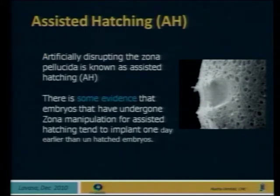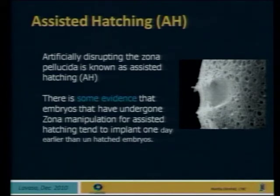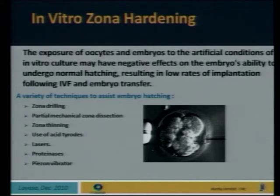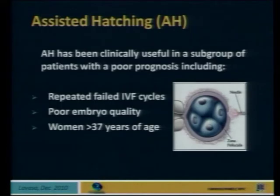What about assisted hatching? Artificially disrupting the zona is known as assisted hatching. There is some evidence that embryos that have undergone zona manipulation for assisted hatching tend to implant one day earlier than an unhatched embryo. The philosophy behind this is that exposure of the oocyte and embryos to artificial conditions has a negative effect on the embryo's ability to hatch, resulting in a low implantation rate. There have been a variety of techniques to assist embryo hatching: drilling, dissection, thinning, use of acids, lasers, proteases, and vibrators. However, it has been clinically useful only in a subgroup.